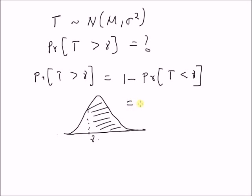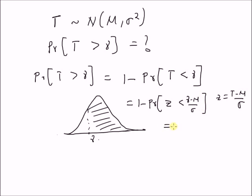By changing the variable t to a standard normal variable, that is z equal to t minus mu by sigma, we have 1 minus the probability of z less than gamma minus mu by sigma, which is equal to 1 minus phi of gamma minus mu by sigma.